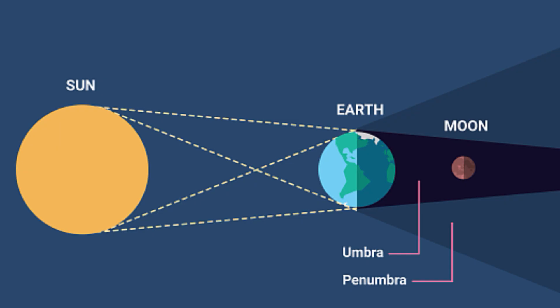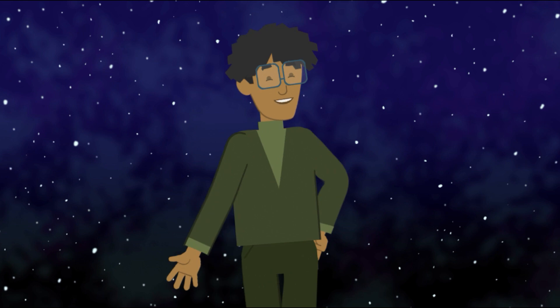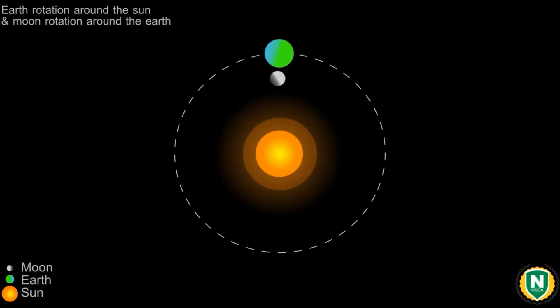Lunar eclipses occur during a full moon, when earth is directly between the sun and the moon, casting a shadow on the moon. But why do these phases occur? The moon's phases are the result of its orbit around earth, and the relative positions of the moon, earth, and the sun.